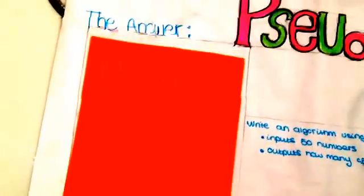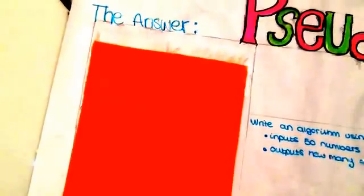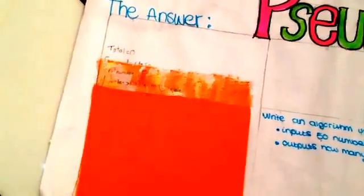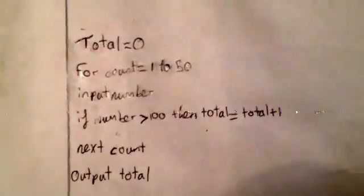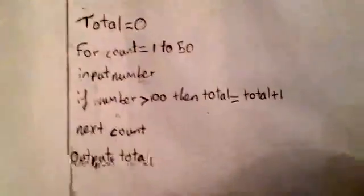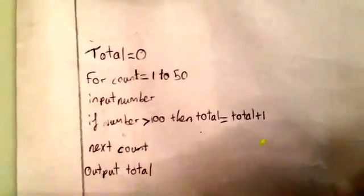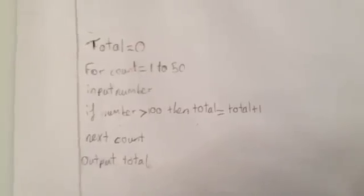Now it's time to find out the answer. The answer is: total equals 0. For count equals 1 to 50, input number. If number greater than 100, then total equals total plus 1. Next count. Output total.